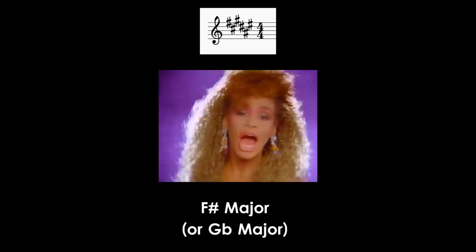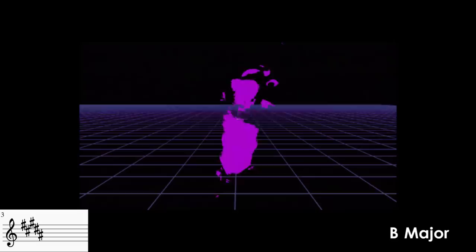Whole-step modulation up is a really popular trope in the 80s. Whitney Houston's 'I Want to Dance with Somebody' is in F# major and about halfway through bumps right up into G# major. It's such a potent 80s trick that I used it in my own 80s song 'Come Back Home.' That song is in the key of B major, but ends up in C# major by bringing in the dominant chord of C# right before, with a wild 80s drum fill to ramp up the excitement.